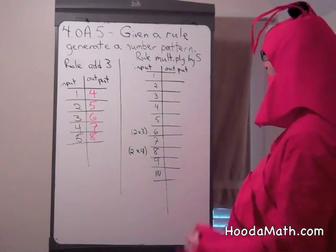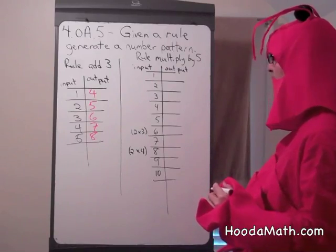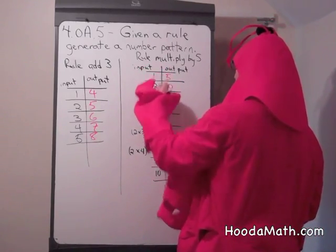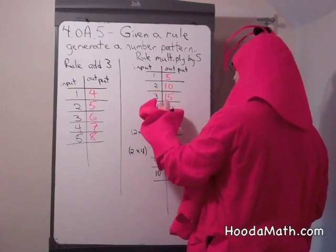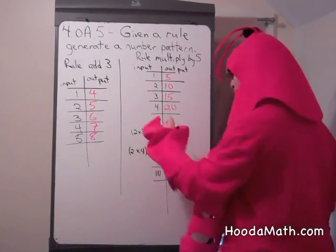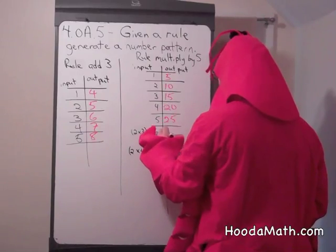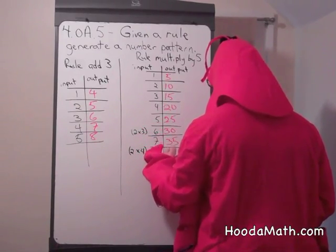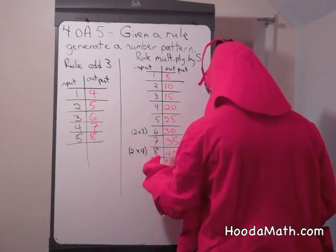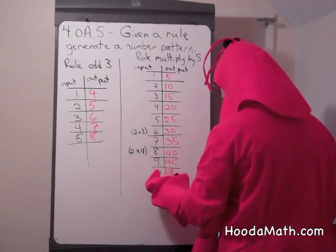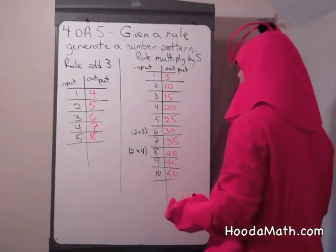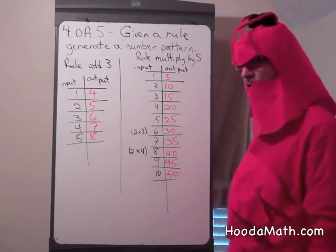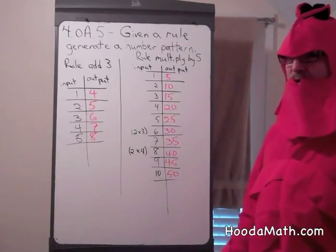Now let's see this pattern. Rule 1: multiply by 5. We get 5, 10, 15, 20. What's next? 25, 30, 35, 40, 45, and 5 times 10 is 50. We get 5, 0, 5, 0, 5, 0 — and it continues. That's our pattern.